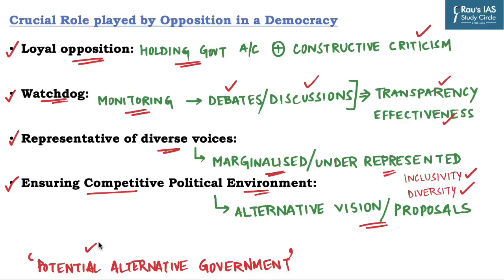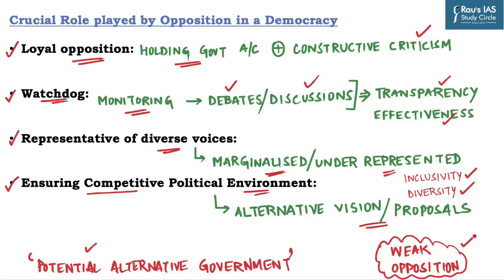Hence we can see that the role of opposition in Indian democracy includes holding government accountable, acting as watchdog, representing diverse voices, promoting competition and offering alternative policy proposals. It serves as a crucial check and balance on the ruling party. Currently we have a weak and fragmented opposition, and the former Chief Justice of India has said that there used to be mutual respect between government and opposition, but unfortunately the space for opposition is now diminishing.